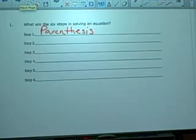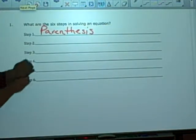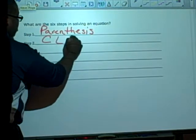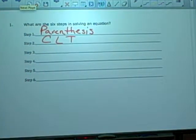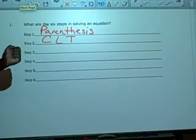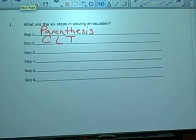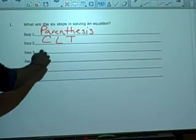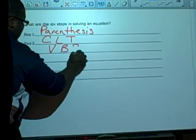Step two, what do I look for next? Combine like terms. I'm going to combine like terms, or in other words, I'm going to put things with the same last name together. Apples with apples, oranges with oranges. Step three, what am I going to do? Variables on both sides.